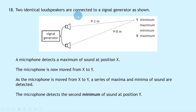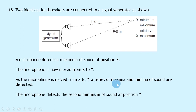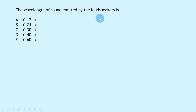Question 18 says two identical loudspeakers are connected to a signal generator. A microphone detects a maximum of sound at position X in the middle. As the microphone is moved from X to Y, a series of maxima and minima are detected — loud and quiet sounds respectively. The microphone detects the second minimum at position Y, where the path lengths from the two loudspeakers are given. The wavelength of sound emitted is?